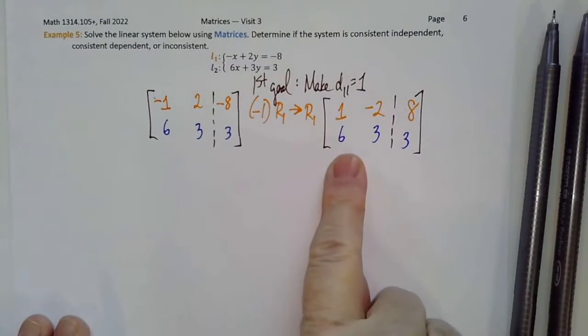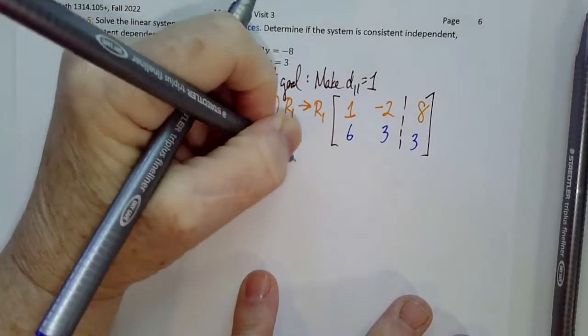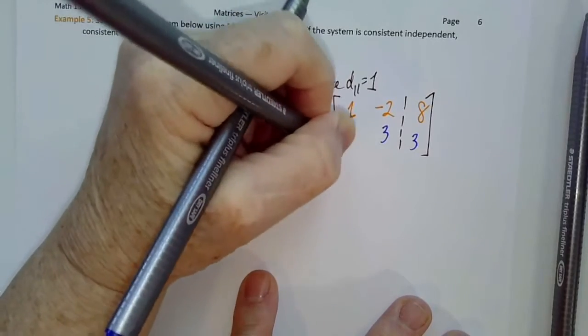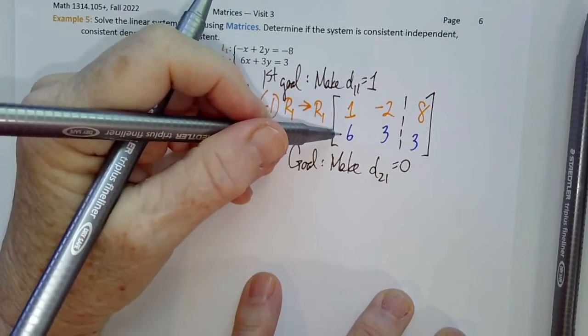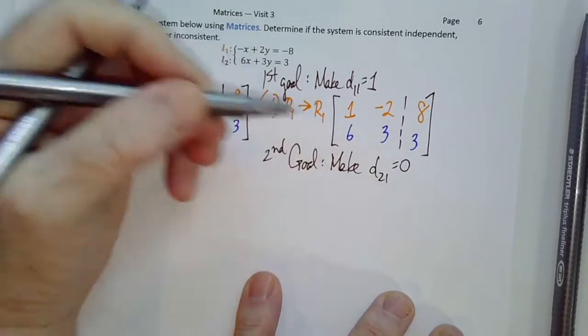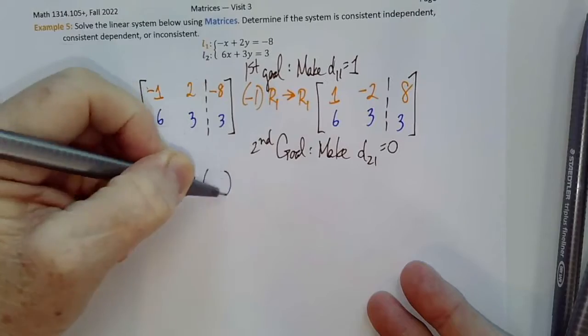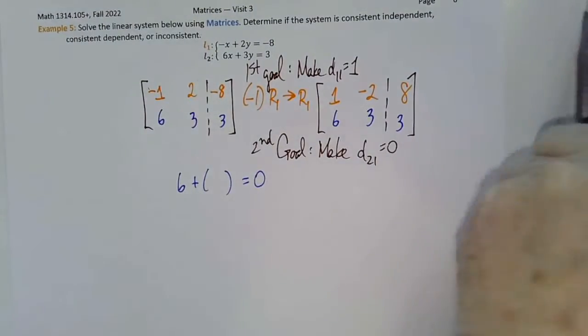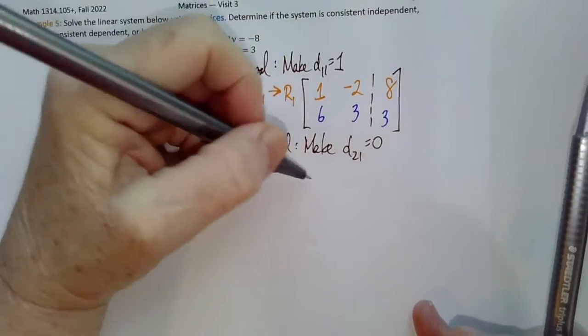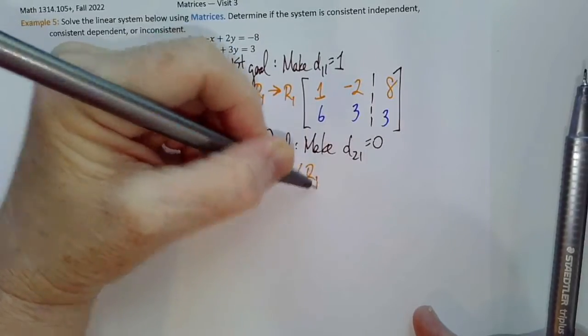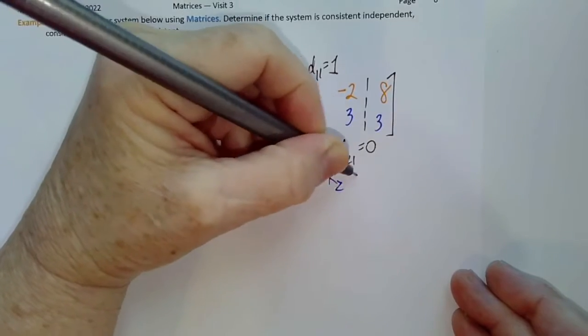Since we currently have a 6 in the second row, we want to make d21 equal to 0. d21 is the second element in the first column. Well, currently d21 is 6, and since 6 plus negative 6 is 0, we're going to multiply the row we just fixed, row 1, by negative 6, add that to row 2 to give us a new row 2.